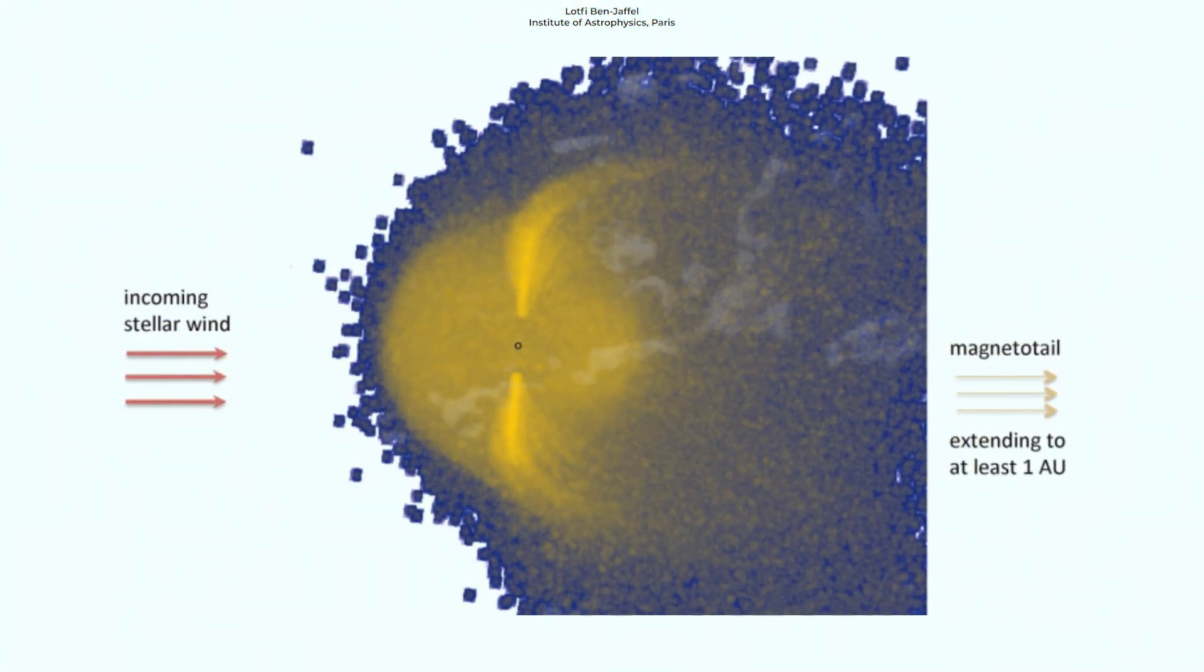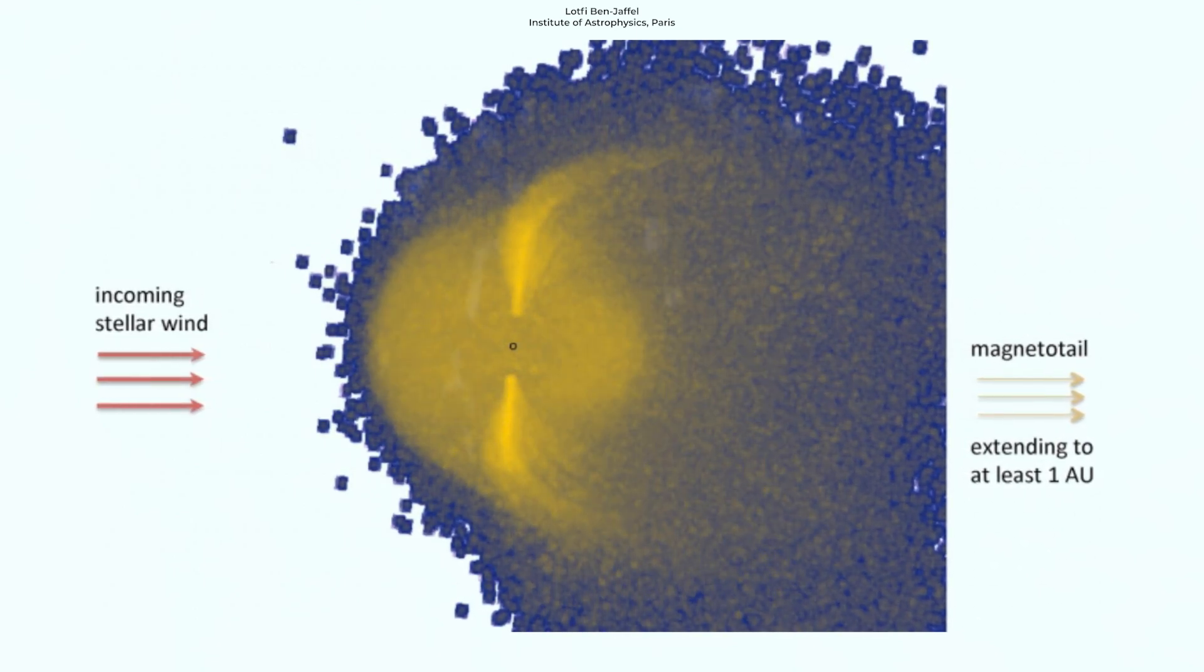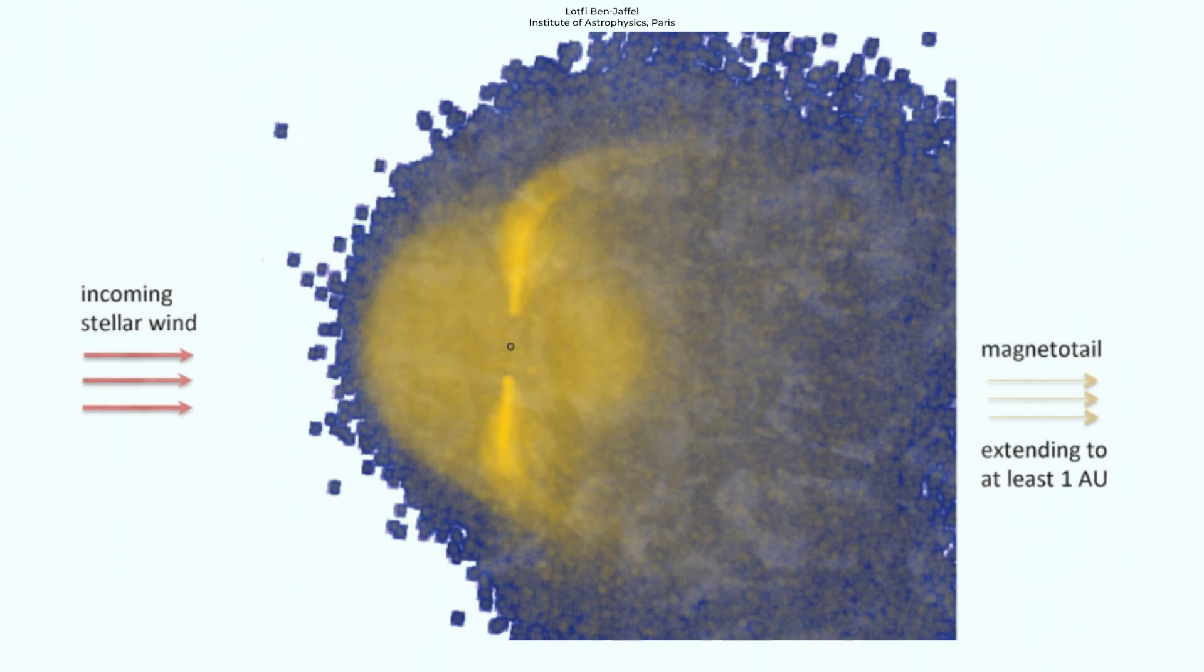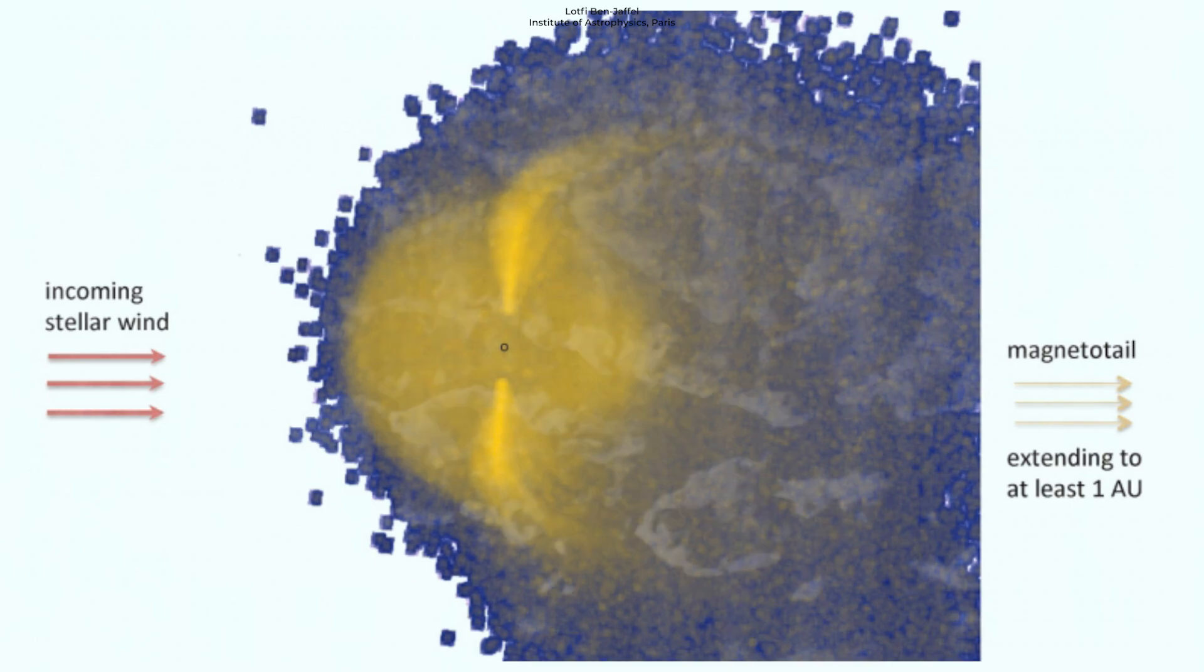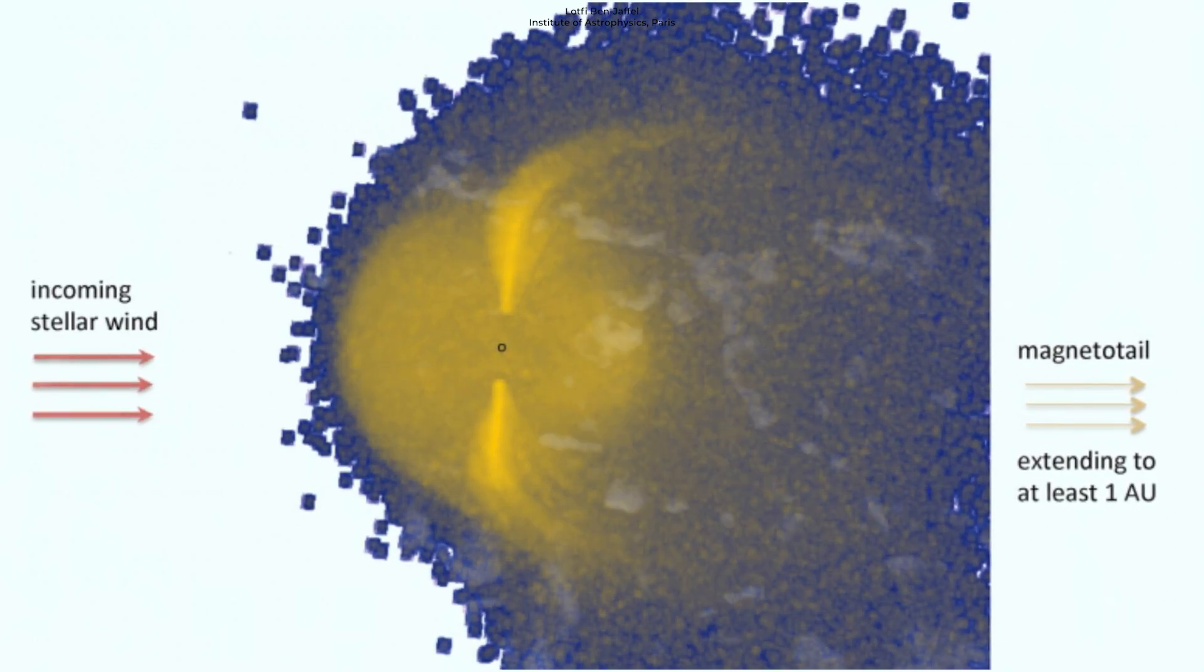HAT-P-11b proved to be a highly fascinating target because Hubble's UV transit observations showed a magnetic field that was seen as both an extended ion component around the planet and a long tail of escape ions.